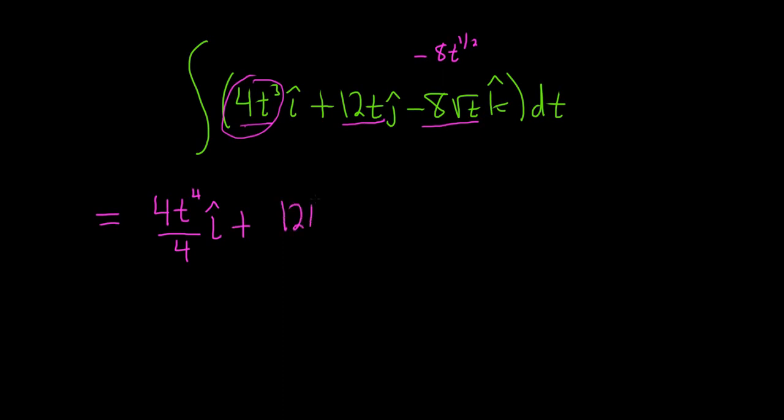Plus 12t squared, and then we divide by 2. Again, that's the power rule, and we have our j-hat.